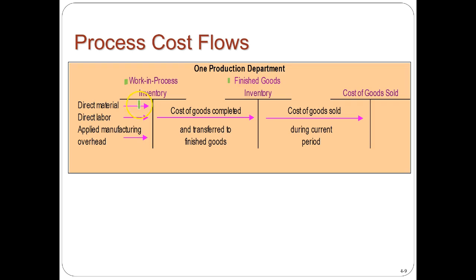Work in process and finished goods are asset accounts with debit balances, so we increase them with debits. First, we get materials: debit work in process, credit the materials account. Then we add labor: debit work in process instead of wages expense, since it's going into the job, and credit wages payable or cash. We also apply overhead — depreciation on the factory and small items — debiting work in process and crediting materials or the overhead account. Once finished, we credit work in process and debit finished goods.